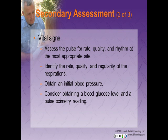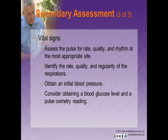Obtain vital signs. Assess the pulse for quality, rate, and rhythm at the most appropriate site. Identify the rate, quality, and regularity of respiratory effort and any difficulties that may be apparent. Obtain your initial blood pressure, measuring both systolic and diastolic numbers. Consider using the automated blood pressure cuff for future assessments at regular intervals and consider obtaining a blood glucose level and a pulse oximetry reading.